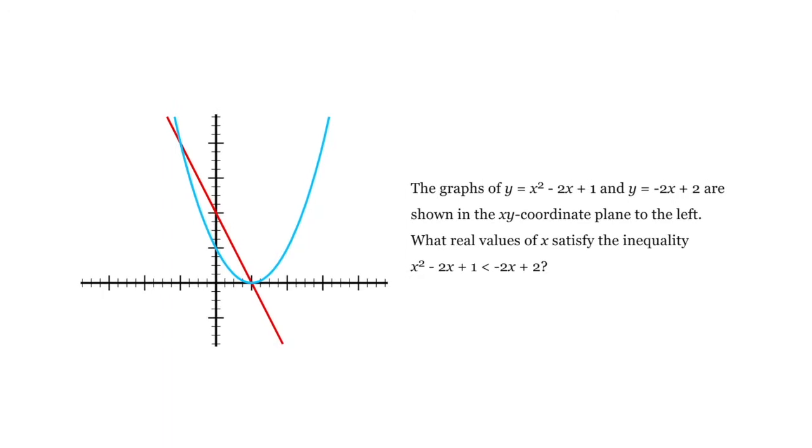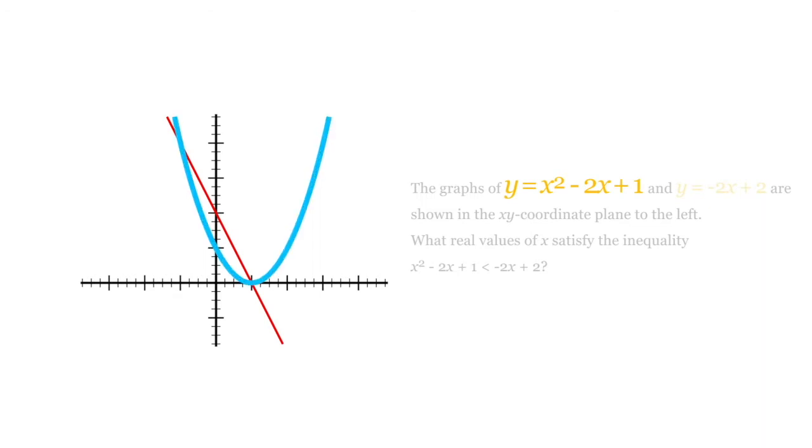Well, first of all, we have to figure out which of these two is the parabola and which is the line. You should know that if you see an x squared, that means it's a parabola. So this equation is represented by this line and this equation is represented by this line.